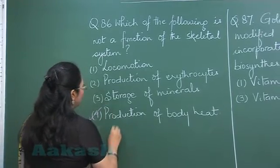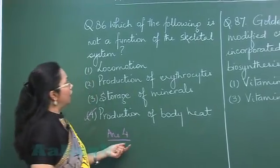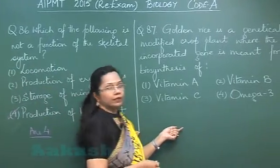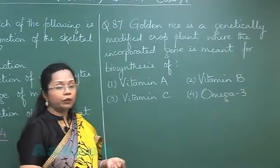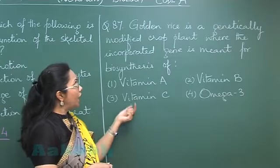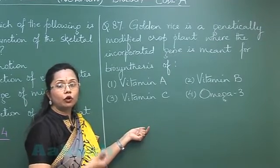Now the next question, 87: Golden rice is a genetically modified crop where the incorporated gene is meant for biosynthesis of... In this plant, the genes for the biosynthesis of vitamin A,